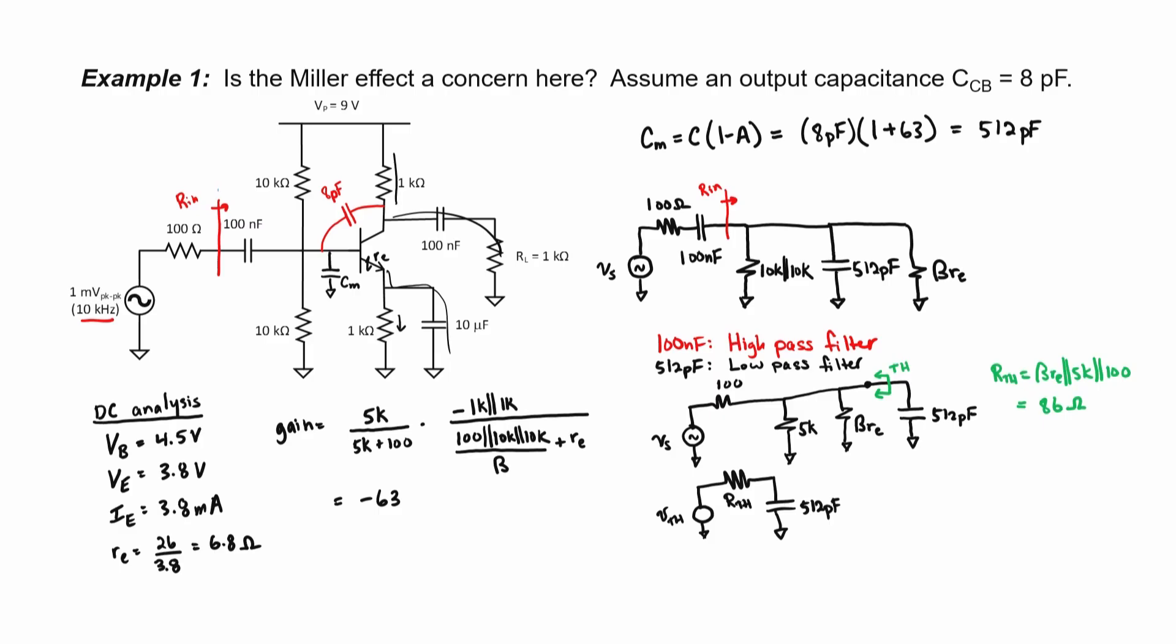The corner frequency of this low-pass filter when I plug in 512 pF for the capacitor and 86 ohms for the resistor works out to be 3.6 MHz. Since our circuit is operating here at 10 kHz, then I can conclude that the Miller effect is not a concern here.